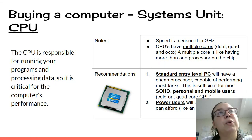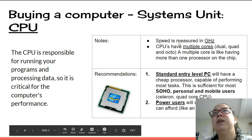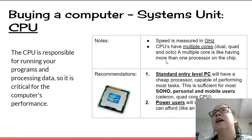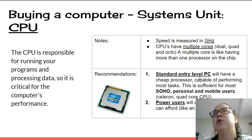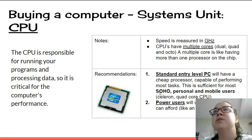The central processing unit is responsible for running your programs and processing data, so it's critical for the computer's performance. Speed is measured in gigahertz. CPUs have multiple cores — you can get a dual core, quad core, or octa core. Multiple cores is like having more than one processor on the chip. A standard entry-level PC will have a cheap processor, probably a Celeron CPU, which is sufficient for most small office, home office, personal, and mobile users.